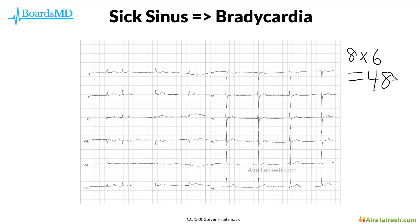Other than knowing that this is a bradycardia, this rhythm strip is actually beyond the scope of what you will need to know for the USMLE as well as your shelf examinations, as this happens to be an AV junctional rhythm. You can see in the second complex that prior to the QRS, we are negative in lead 1 and positive in AVR, which is an atypical extrasystole beat. Regardless, we can appreciate from this EKG that this patient is having an episode of bradycardia.